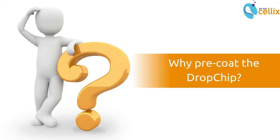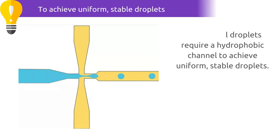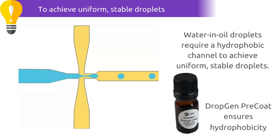Why pre-coat the drop chip? Achieving uniform stable water and oil droplets requires a hydrophobic channel. Pre-coating with Selex's DropGen pre-coat solution ensures hydrophobicity.